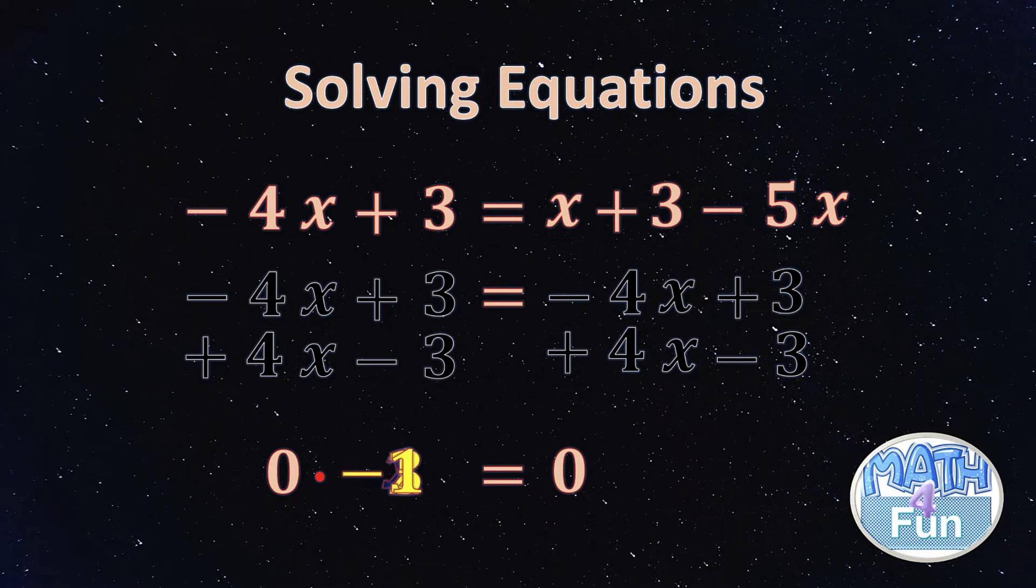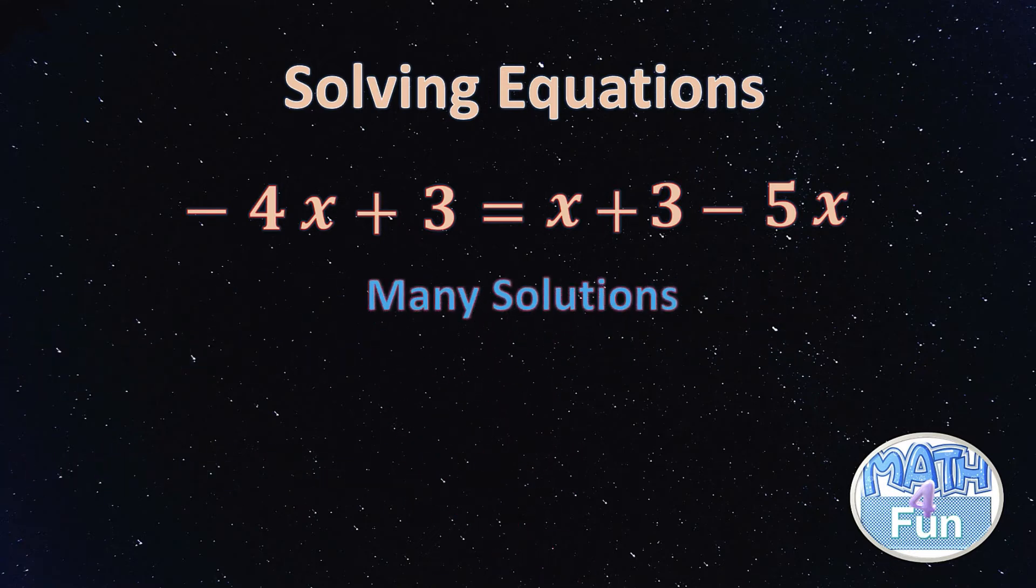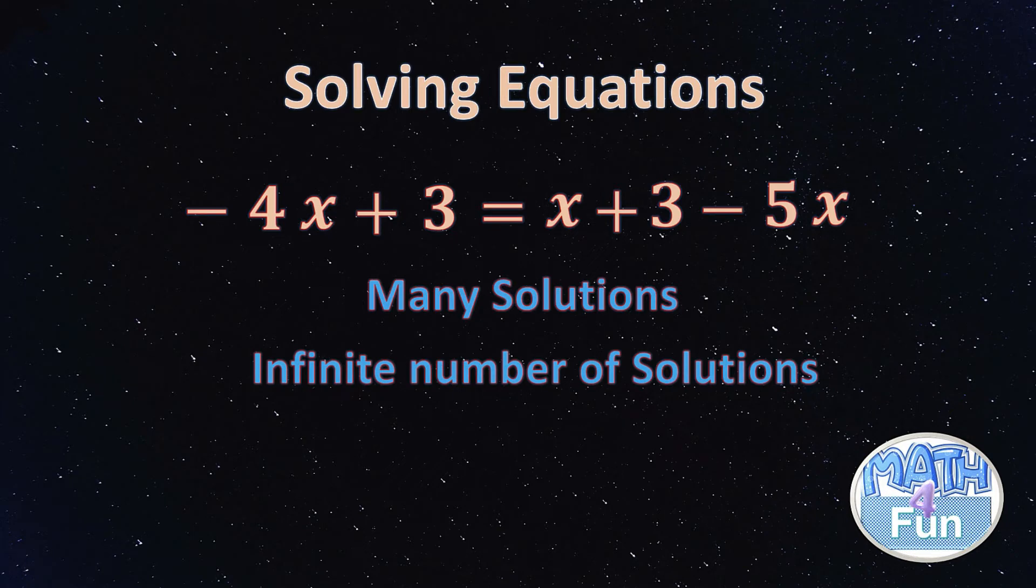If you put negative numbers, -1 times 0 is 0, same. If we put -100, -1000, whatever you put and multiply by 0, you're going to get 0. So here we can say many solutions, or infinite number of solutions, or x belongs to R.